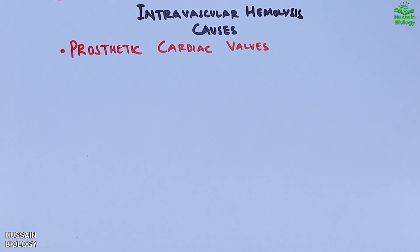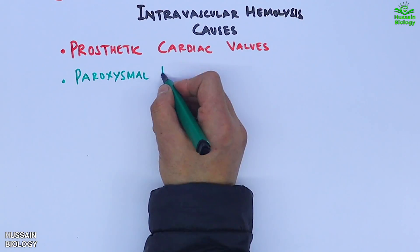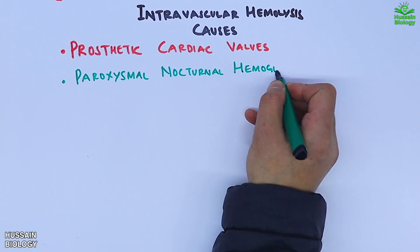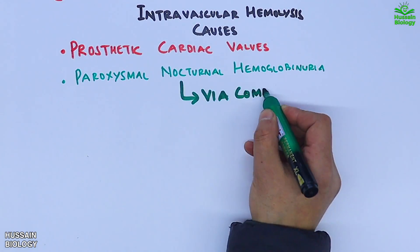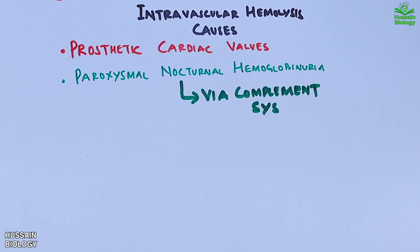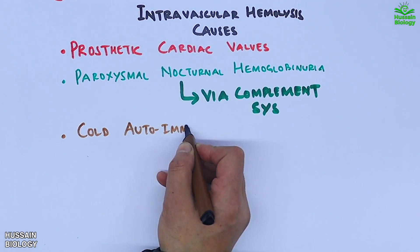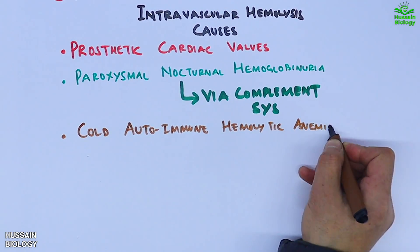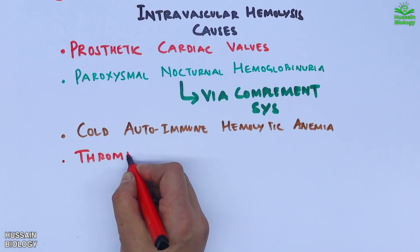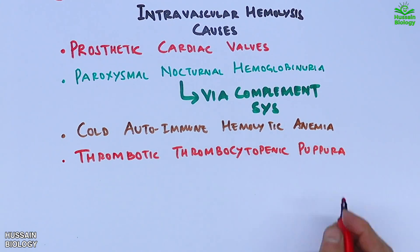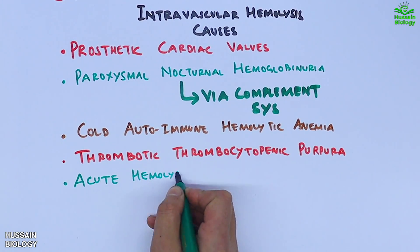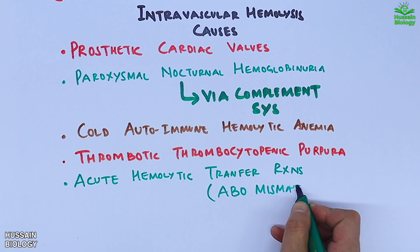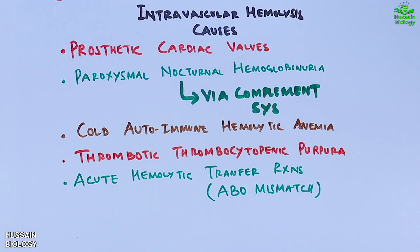Now for intravascular causes: the first important cause is a prosthetic cardiac valve. Second is paroxysmal nocturnal hemoglobinuria, which is stimulated through the complement system. Then we have cold autoimmune hemolytic anemia, followed by thrombotic thrombocytopenic purpura, and acute hemolytic transfusion reactions involving ABO mismatch. These are the major causes driving intravascular hemolysis.